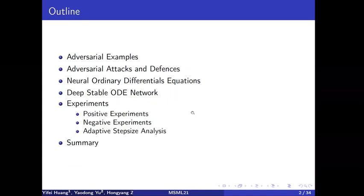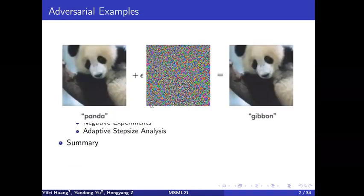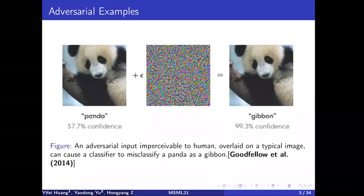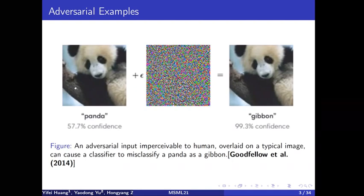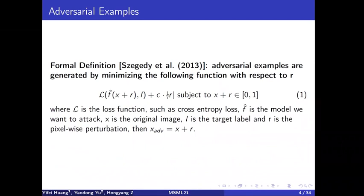First, what is an adversarial example? The left-hand side is the original image, which can be correctly classified by the neural network as a panda with 16% confidence. However, when adding some noise, the perturbed image is wrongly classified by the neural network as a gibbon with 100% confidence. We call this kind of perturbed image — which looks simple to humans but fools neural networks — an adversarial example. Formally, adversarial examples are generated by minimizing a loss function subject to some constraints.